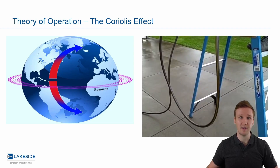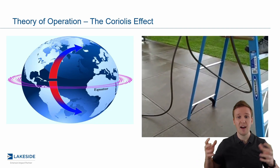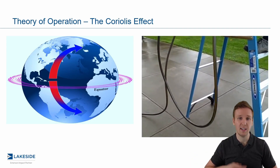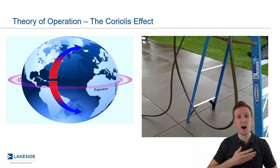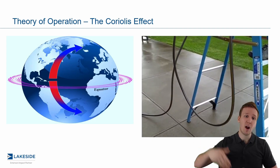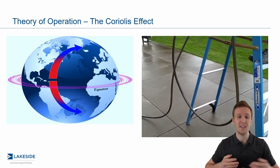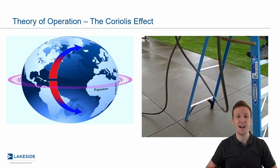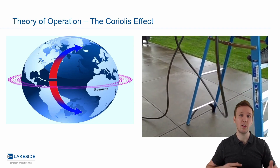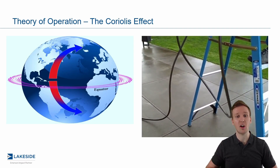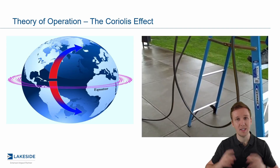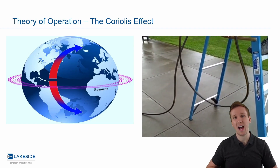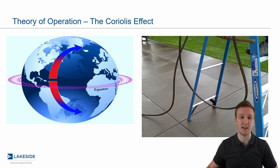To understand this, we'll play this video to help illustrate it. If we have a tube — a garden hose in this case — and we are oscillating it, once flow travels through it you'll see an oscillation between the left and the right side. That is the Coriolis effect introduced on this garden hose, and we take advantage of this with Coriolis flow meters to measure and quantify how much of a Coriolis effect we are seeing.